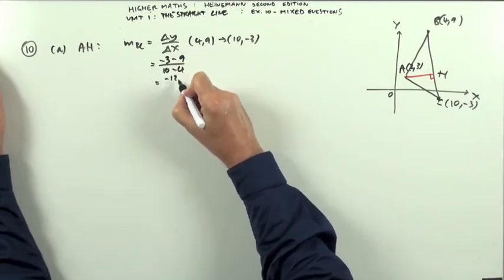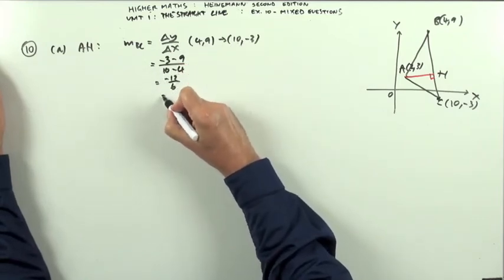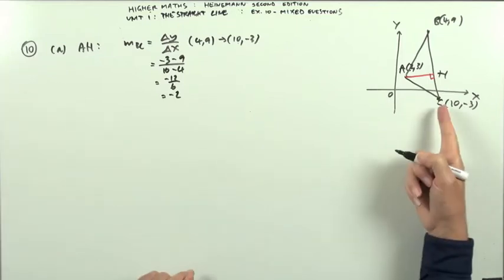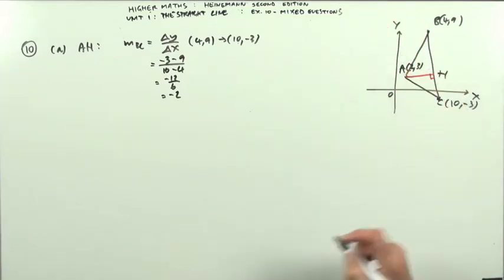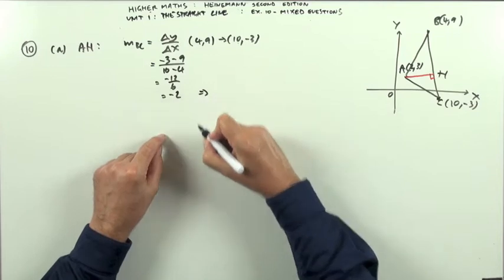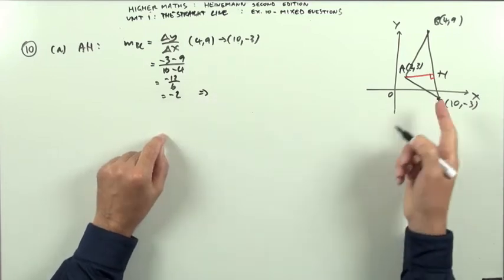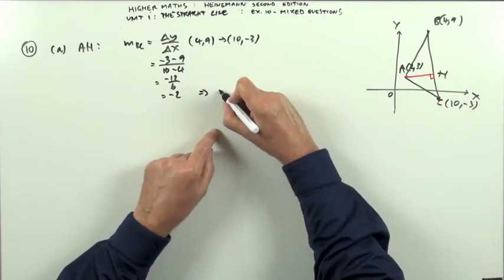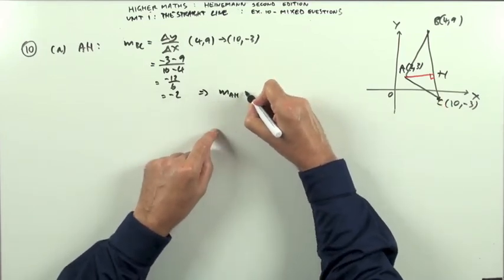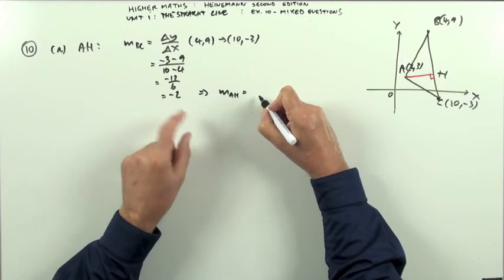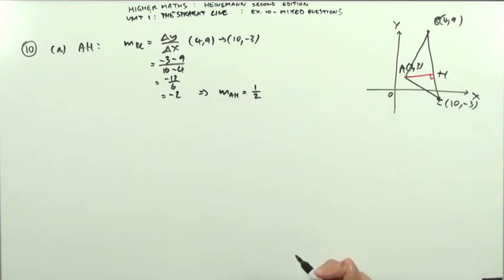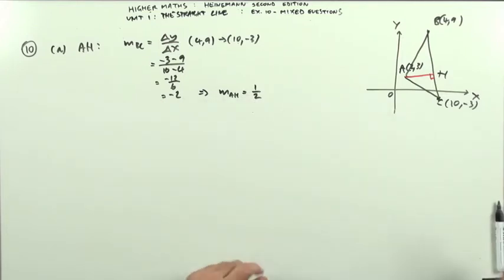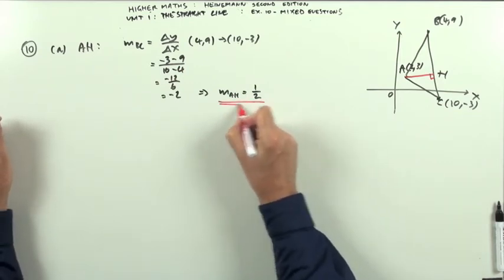That's −12 over 6, which is −2. Just check with the diagram — is it steeply downward? Yes, that looks right. Since AH is the altitude, it must be perpendicular to BC, so the gradient of AH is the negative reciprocal of −2. Turn it upside down and make it negative — they must multiply to give −1. So the gradient of AH is 1/2.